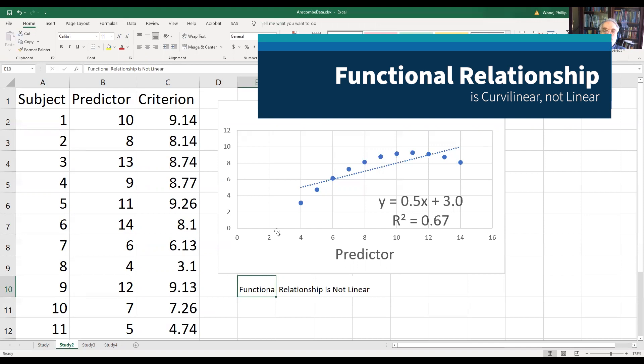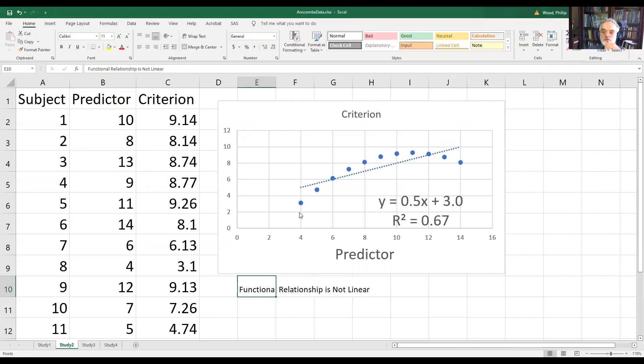Here's the data from study two. Well, notice that the functional relationship is not linear. That is, all of these lines fall on a curve. And the reason that I got a correlation, squared correlation of 0.67 was because I incorrectly specified a straight line when really there's a curve line that underlies the data. Notice that the regression line you have here is also identical to what we had in the first case.